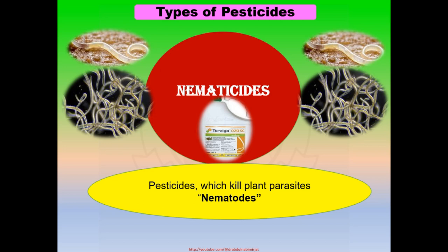Nematocides are the types of pesticides which kill plant-parasitic nematodes. Nematodes are numerous multicellular parasitic worms. They are very small and slender type worms.